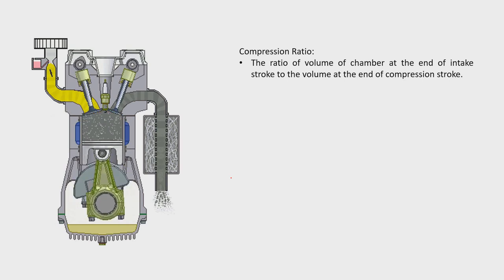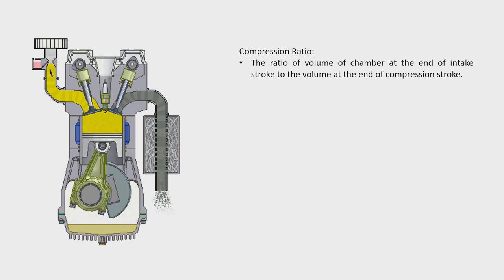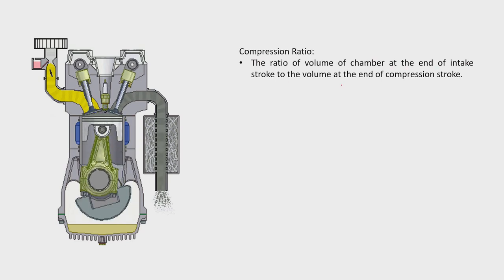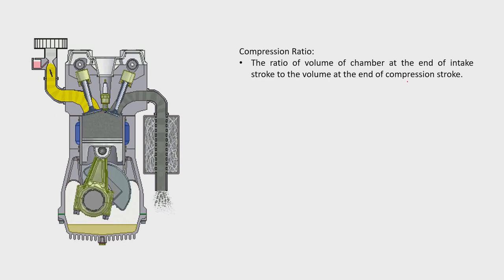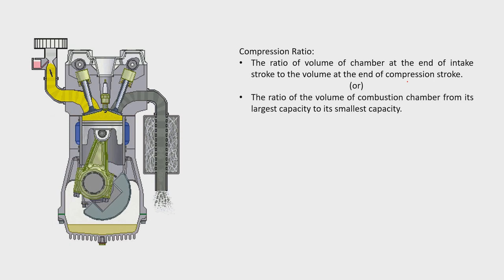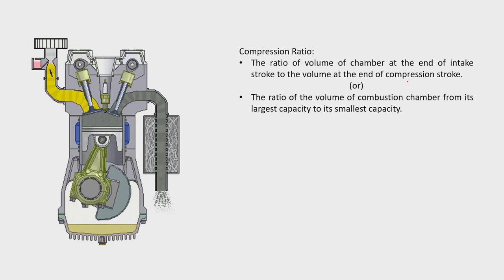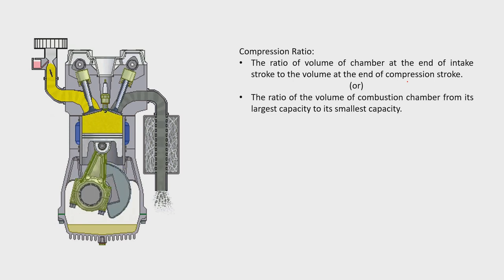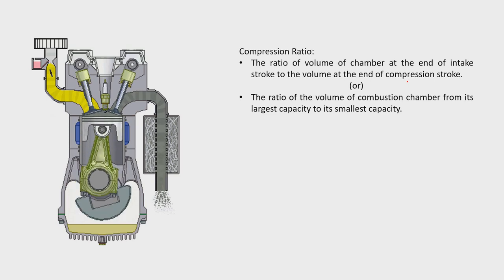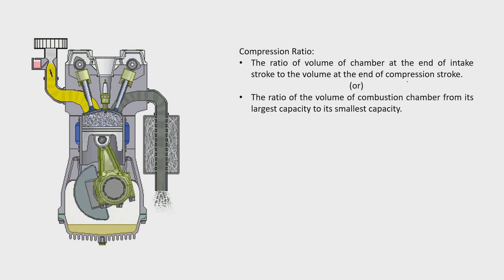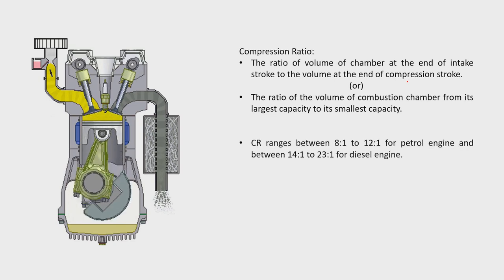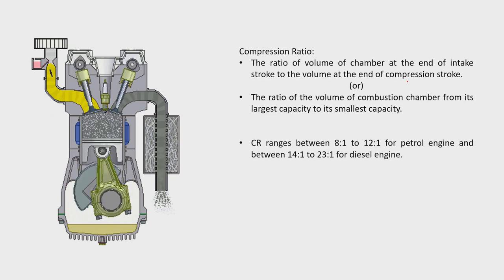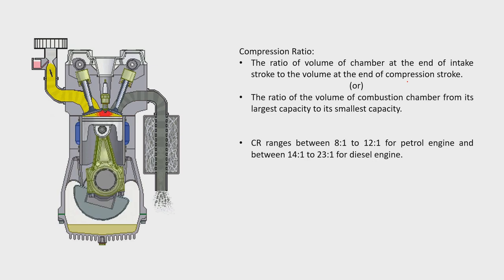The compression ratio is the ratio of volume of the chamber at the end of the intake stroke to the volume at the end of the compression stroke. It can also be defined as the ratio of volume of the combustion chamber from its largest capacity to its smallest capacity. Largest capacity is when fuel is drawn in during the intake stroke, and smallest capacity is when the fuel-air mixture is fully compressed.